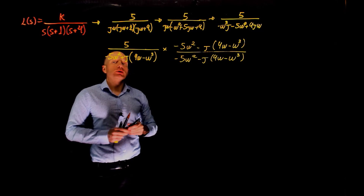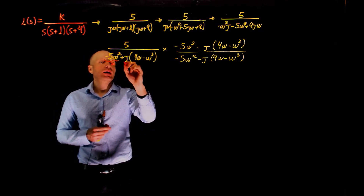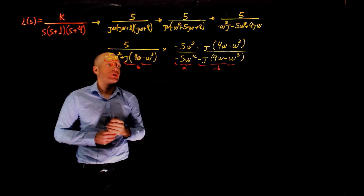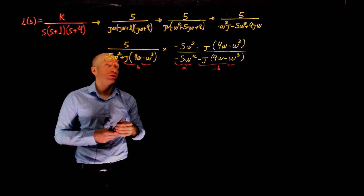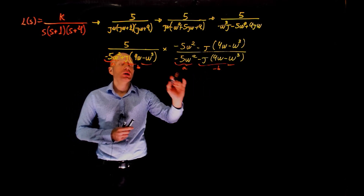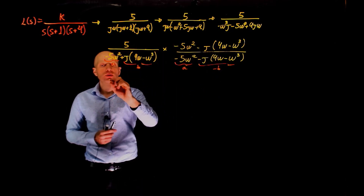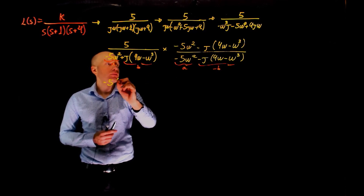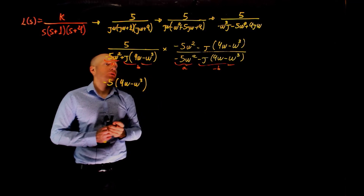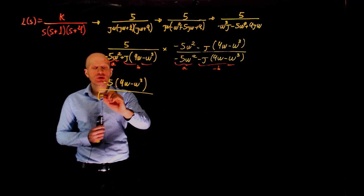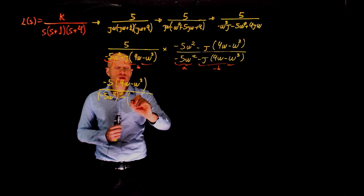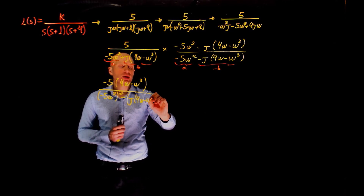We have a plus b times a minus b, which gives a squared minus b squared. We don't care about the real part — we are only interested in the imaginary part. The imaginary part is 5 times (negative 4 omega minus omega cubed), divided by a squared, which is (negative 5 omega squared) squared, minus b squared, which is j times (4 omega minus omega cubed).